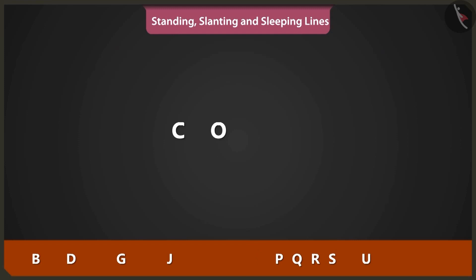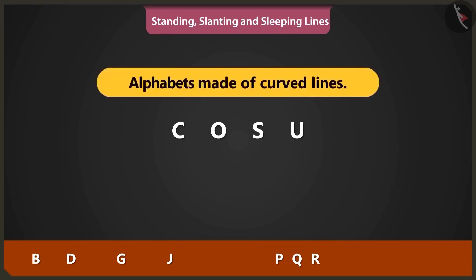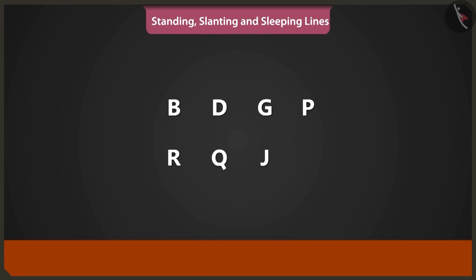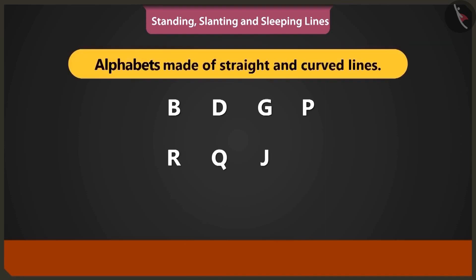C, O, S and U alphabets are made using curved lines. B, D, G, P, R, Q, and J are alphabets made using straight and curved lines.